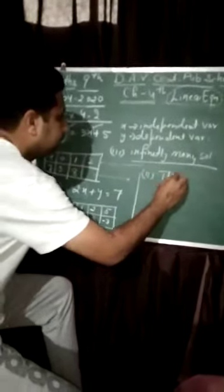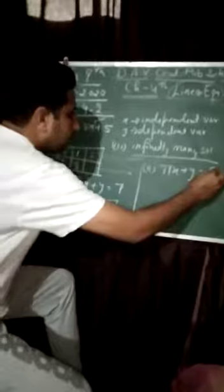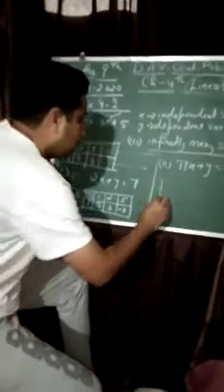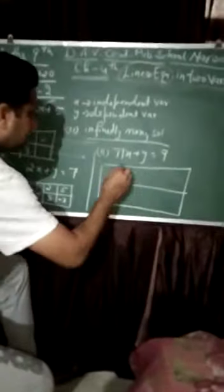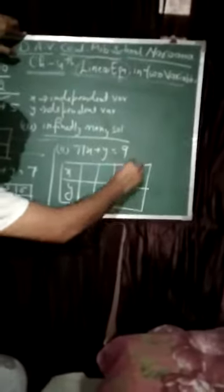Next equation, x plus pi y equal to 9. There's no need to be scared if the answer comes in the form of pi. Some students get scared seeing pi, square root, cube root, but there's no need.